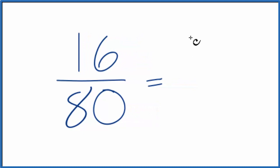16 divided by 16 is 1. And then you could divide 80 by 16, the denominator here. And 16 goes into 80 5 times. 5 times 16, that's 80.